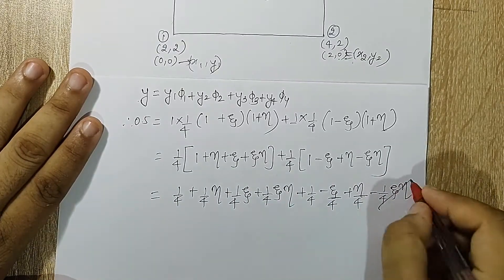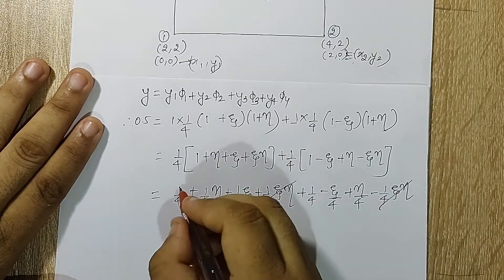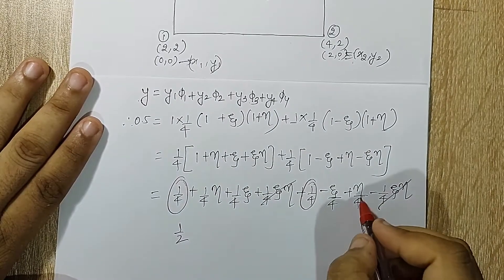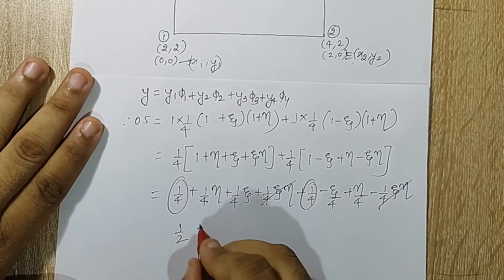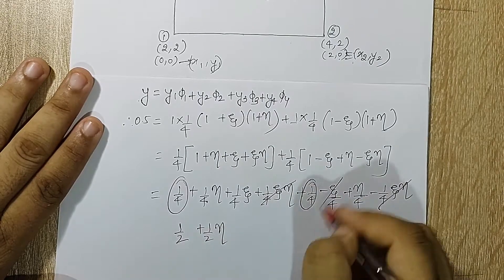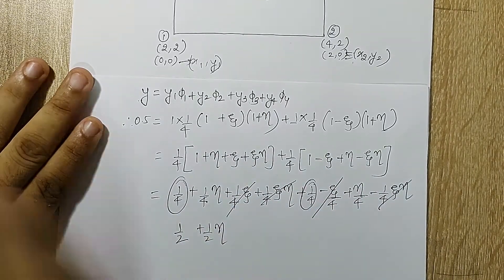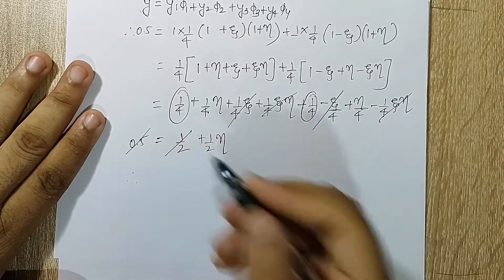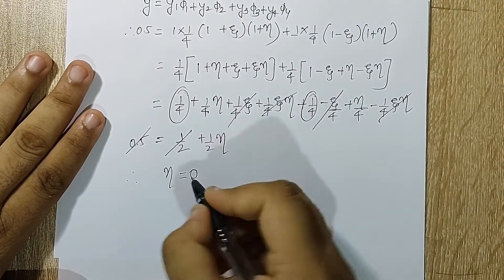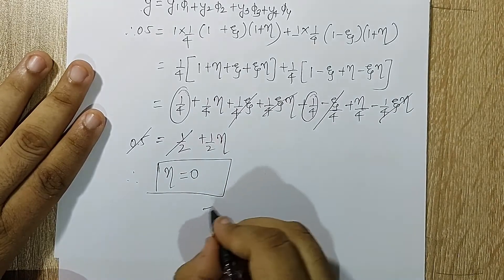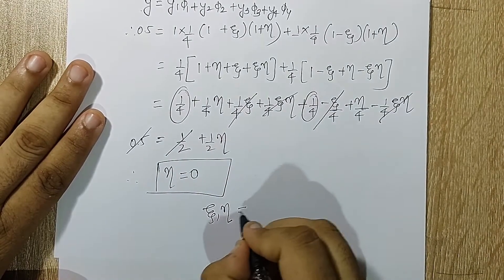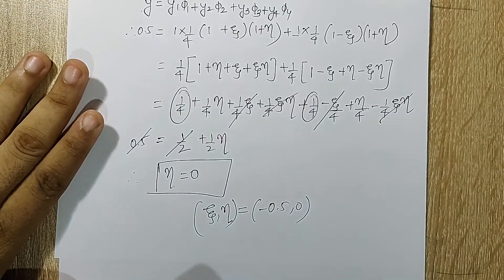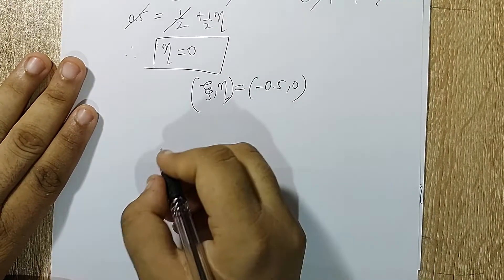After opening and simplifying the brackets, the zeta terms cancel out, the ηζ terms cancel out, the constant terms add up to one-half, and the eta terms add up to (1/2)η. On the left-hand side I have 0.5, so 0.5 = 0.5 + (1/2)η, which gives eta = 0. So my natural coordinates are ζ = −0.5, η = 0.